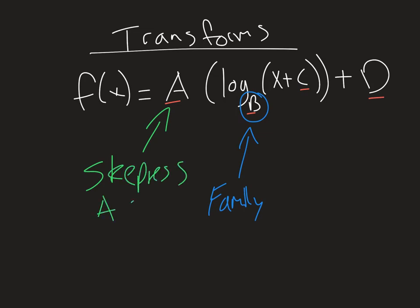If it happens to be negative, it's going to reflect over the x-axis. So a has the power to make it steeper and also has the power to reflect over the x-axis if it's less than zero.